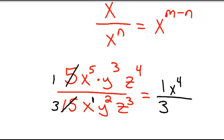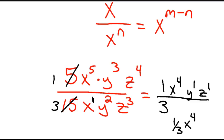y cubed divided by y squared — 3 minus 2 — gives y to the 1st power. And the final one: z to the 4th divided by z to the 3rd gives z to the 1st power. So we've got 1 third, x to the 4th, y to the 1st, z to the 1st.